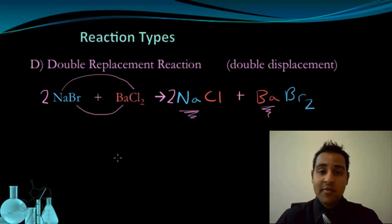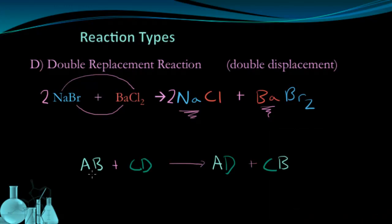The general form for double replacement reactions looks something like this: AB plus CD yields AD plus CB. You can think of this as the anions switching places. So the B anion switches with the D anion, and the D takes the place of the B anion. This is a double replacement reaction.